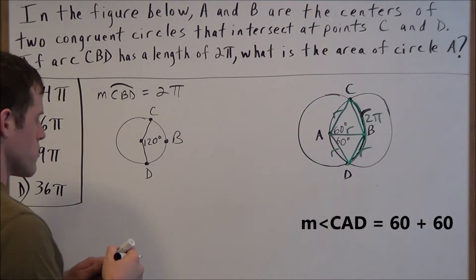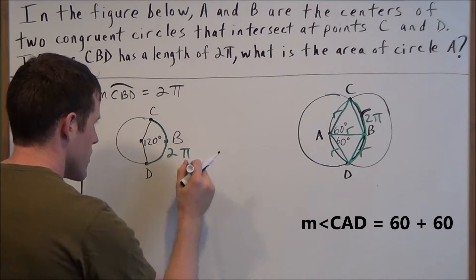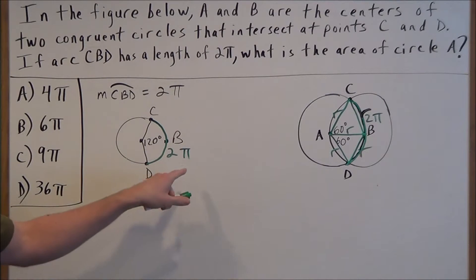So now this becomes much more doable to solve. This arc here is still length 2π. But this tells us, since 120 degrees is one third of 360, we have one third of the circumference here.